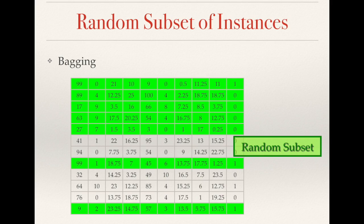Have a look at this example. This table shows a dataset, and the first nine columns represent the attributes and the last column represents the target value we would like to predict. Each of the rows of the table represents an individual data sample.